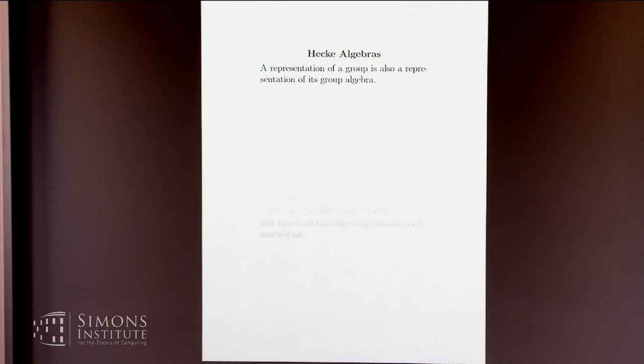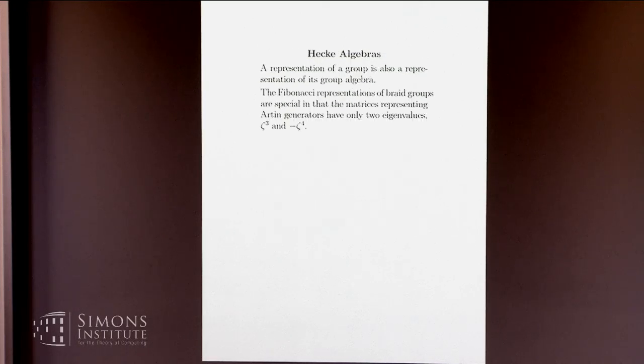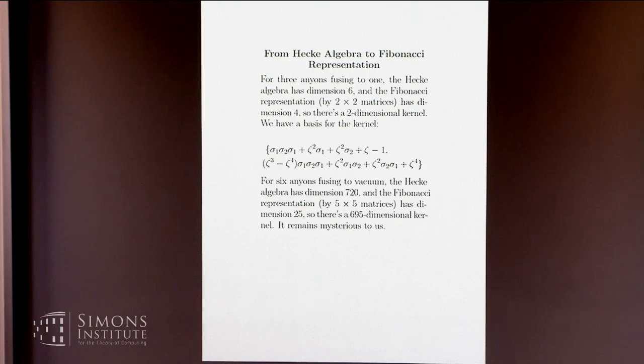Now if I'm right, my next slide is going to say Hecke algebras. And I think rather than talking excessively wrong about Hecke algebras, I will just say there's a bunch of stuff on slides about Hecke algebras here. Actually, I think it's only two slides. One, two. That's it. Okay. And it ends with needing a 695 dimensional kernel of something or other that remains mysterious. In fact, all 695 dimensional things are mysterious. And I think that's probably as good a place to stop since I'm already slightly over time. Thank you.